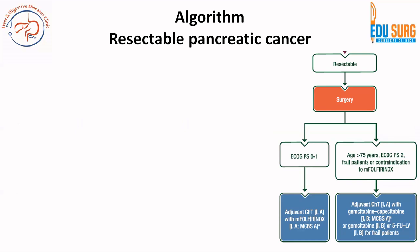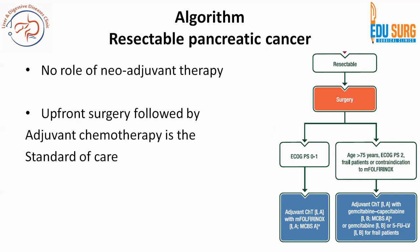Coming to algorithms on management: the easiest algorithm is for resectable pancreatic cancer. Even though trials on neoadjuvant therapy are emerging, as of now for resectable pancreatic cancer neoadjuvant therapy is not the standard. The latest guidelines suggest these cases should undergo upfront surgery. If the patient has ECOG performance status 0 or 1, adjuvant therapy is indicated in all cases. Modified FOLFIRINOX is preferred; if contraindicated, options include Gemcitabine-Capecitabine, Gemcitabine-Paclitaxel, or 5-FU alone.